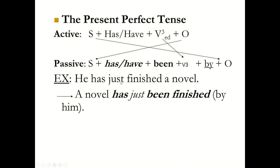For example: 'He has just finished a novel.' He is the subject, has just finished is the verb in past participle form, and a novel is the object. In the passive voice: 'A novel has just been finished' — then optionally 'by him.' It is optional to write 'by him' or leave it out.